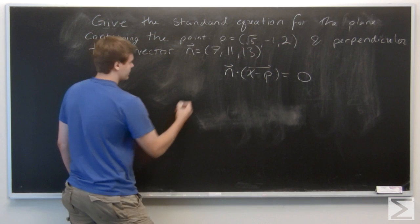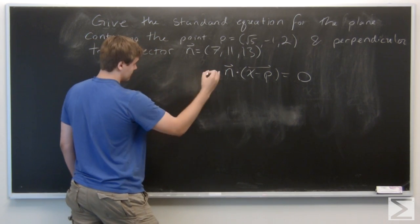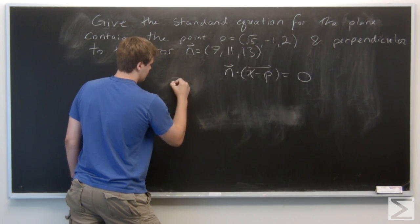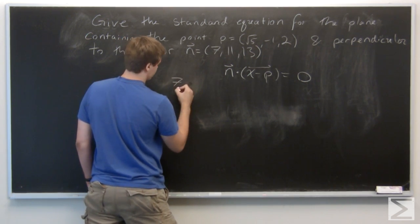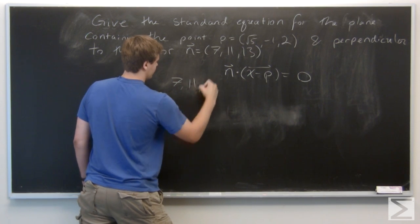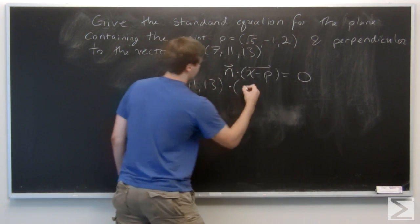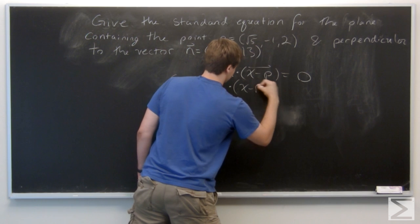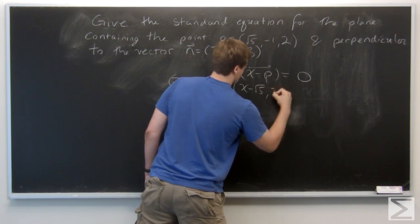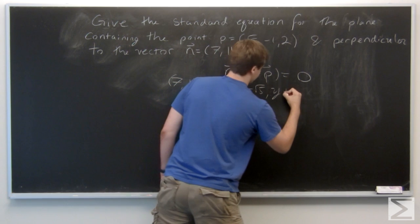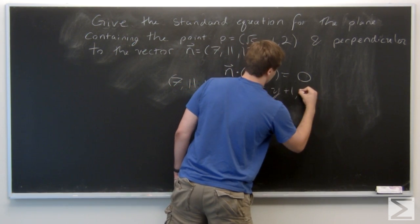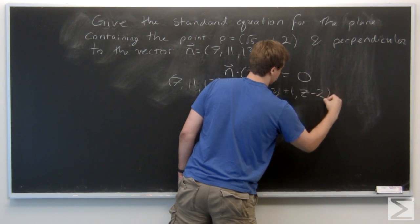So simplifying this out, we get that the standard equation for the plane is going to be (7, 11, 13) dot (x - √5, y + 1, z - 2) equal to 0.